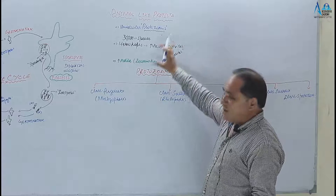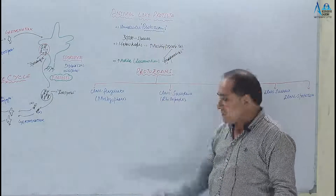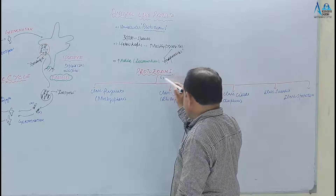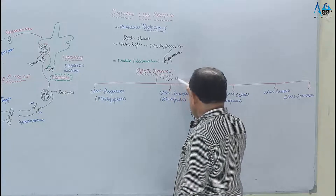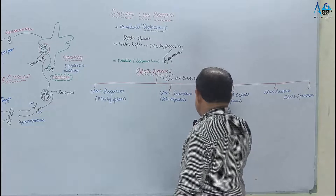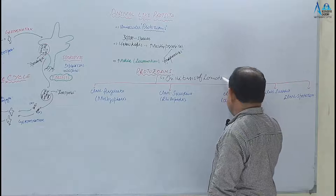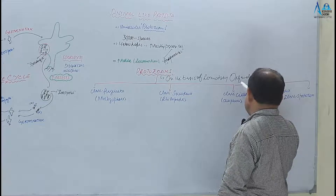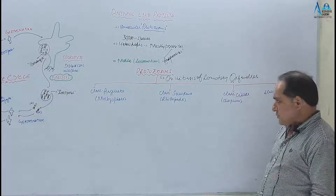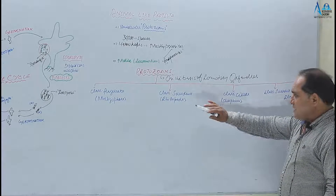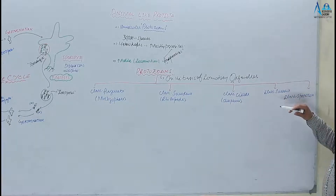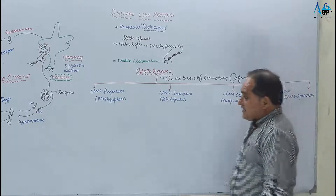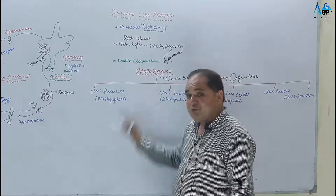In protozoa ko on the basis of locomotory organelles classify kiya gaya hai paanch bade groups mein — Flagellata/Mastigophora, Sarcodina/Rhizopoda, Ciliata/Ciliophora, Suctoria, aur Sporozoa. Yad rakhna: jahan do se zyada naam aate hain, woh aapko yaad rakhna hai.